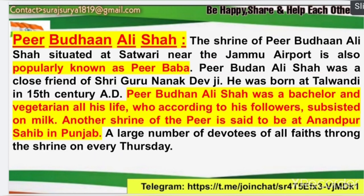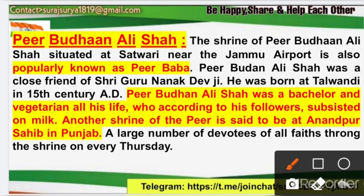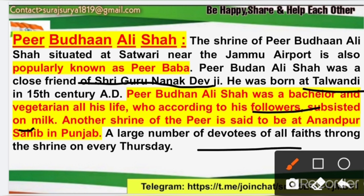Another important tourist destination in Jammu district is Peer Budhan Ali Shah. This is a revered Peer located in Satwari, near Jammu Airport. He is also known as Peer Baba. Peer Budhan was a close friend of Shri Guru Nanak Dev Ji — just like Guru Nanak Dev, he was also born in Talwandi village in the 15th century. Peer Budhan Ali Shah was celibate, did not eat meat, and his followers would offer him milk and dairy products. His other shrine is known as Anand Purush Sahib, located in Punjab. Devotees visit every Thursday for worship.